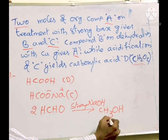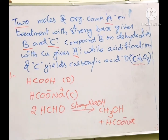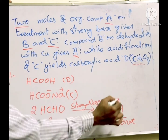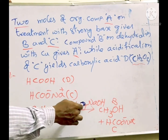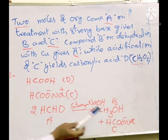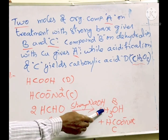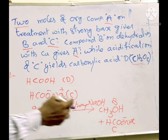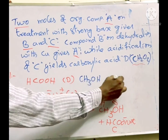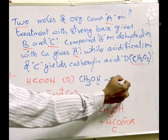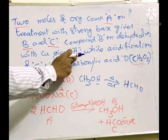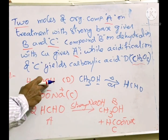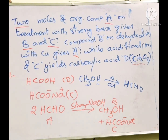So the compound A is formaldehyde HCHO, B is methanol CH3OH, and C is sodium formate HCOONa. Verification: A is formaldehyde. Two moles of A with NaOH give B (methanol) and C (sodium formate) — Cannizzaro reaction confirmed. Compound B (CH3OH) on dehydration with copper: H and H will go, and whatever is left is HCHO — you get A once again. Acidification of C gives formic acid — that is D. This way we can answer this question.